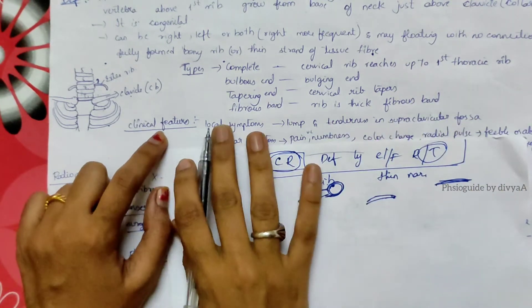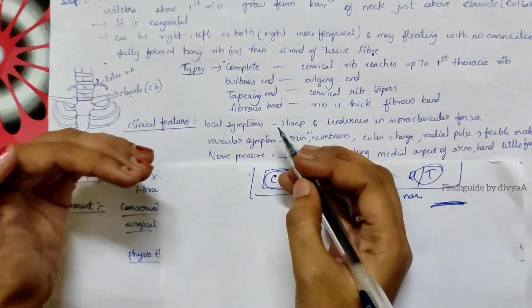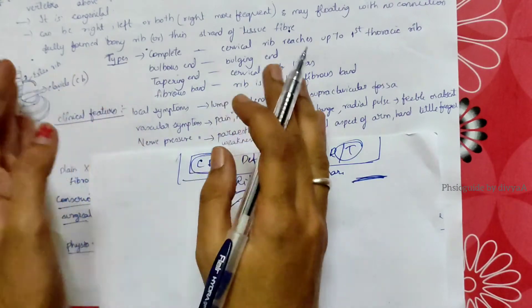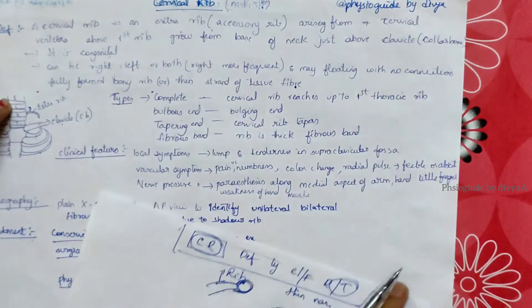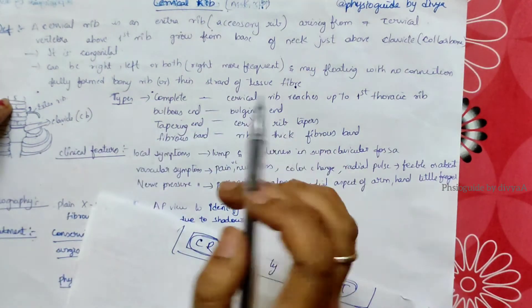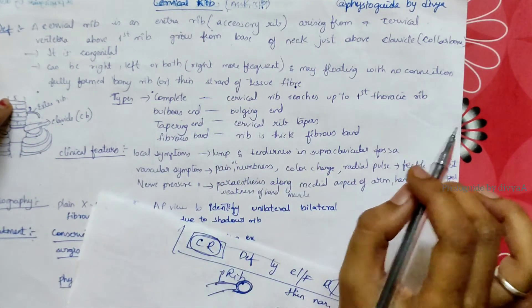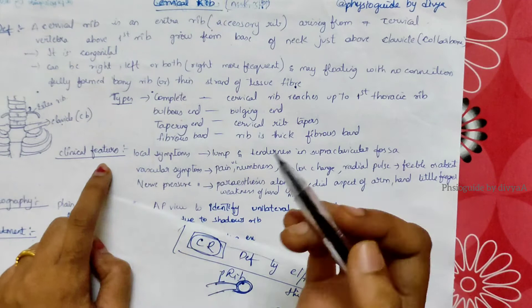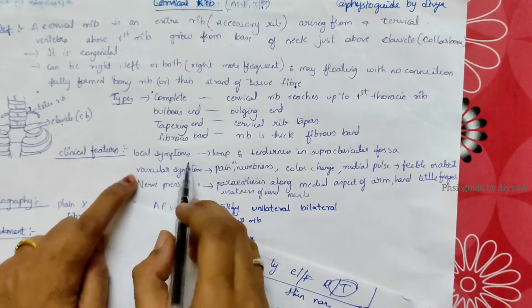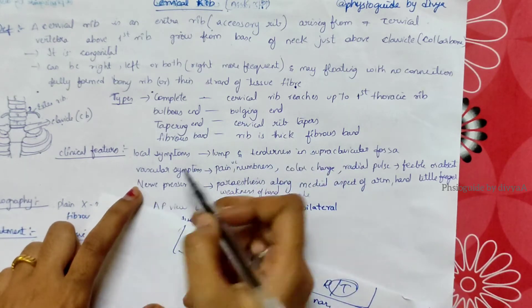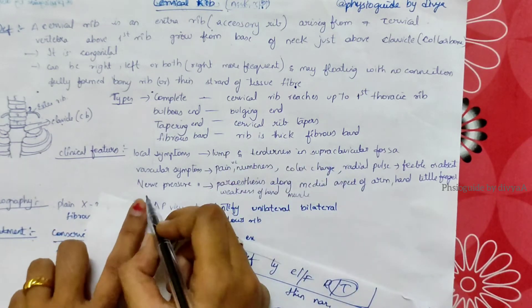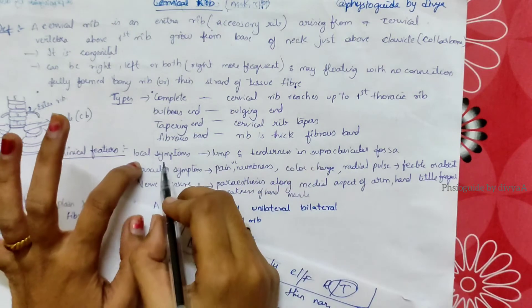What are the clinical features? There are three types: local symptoms, vascular symptoms related to arteries and veins, and nerve pressure symptoms. Once you understand this and read the textbook, you'll clearly understand.